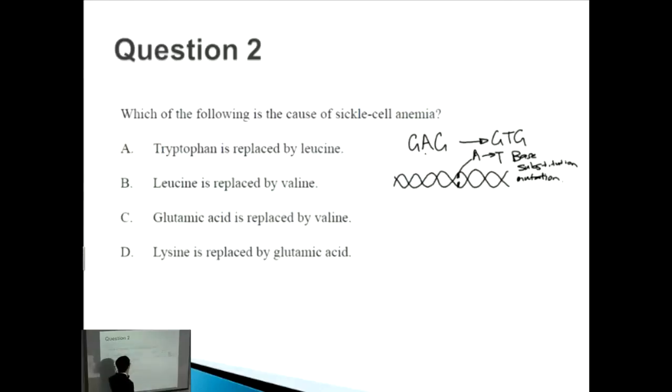The important thing to know about this question is that because of this base substitution mutation, the resulting protein or polypeptide goes from glutamic acid to valine. G is before V, so glutamic acid just goes to valine and it's not the other way around. If you scan down, it's over here: glutamic acid is replaced by valine, so that's this answer here.